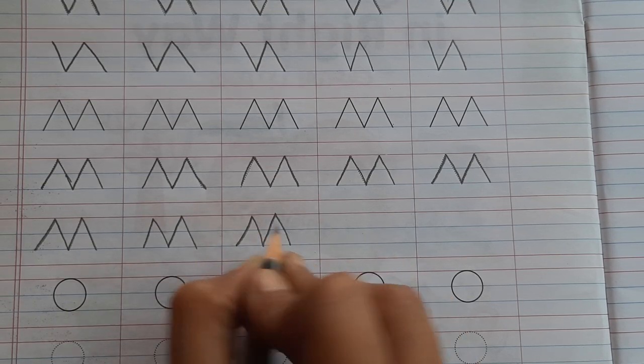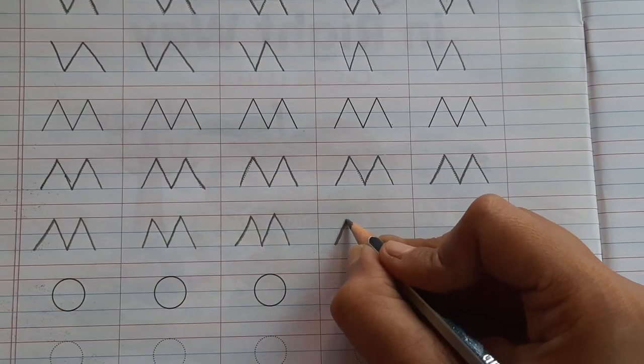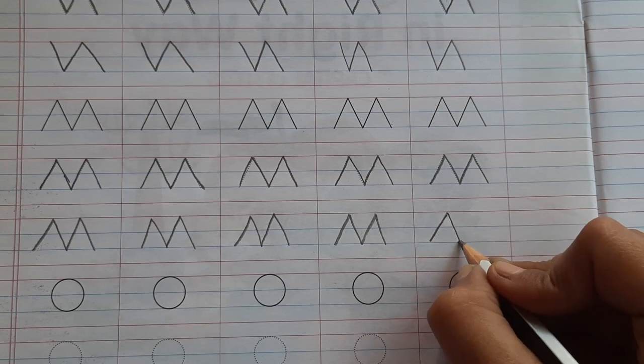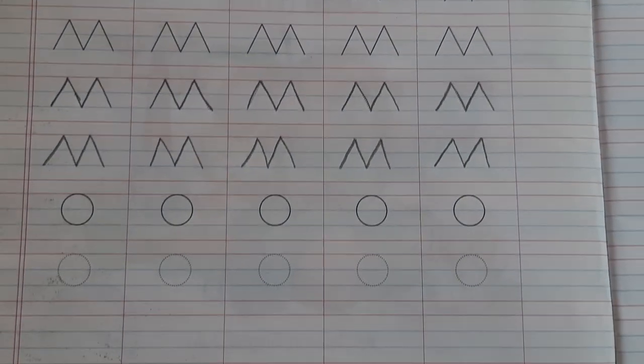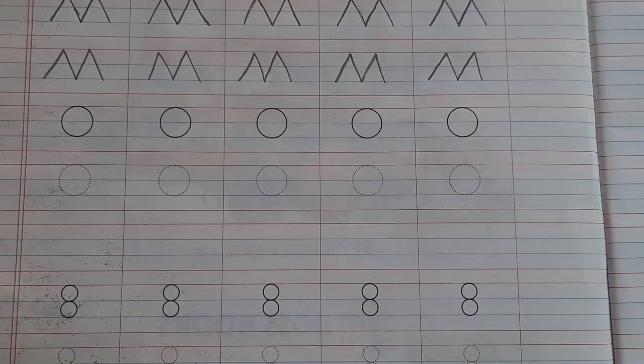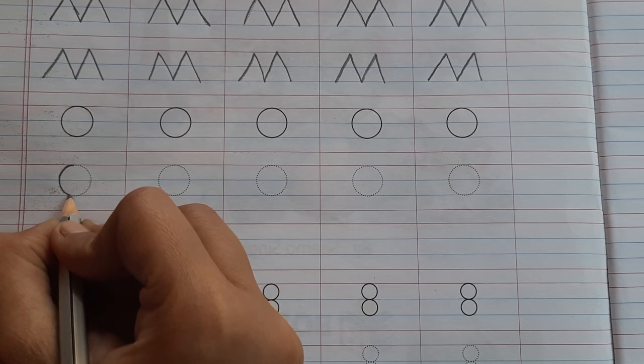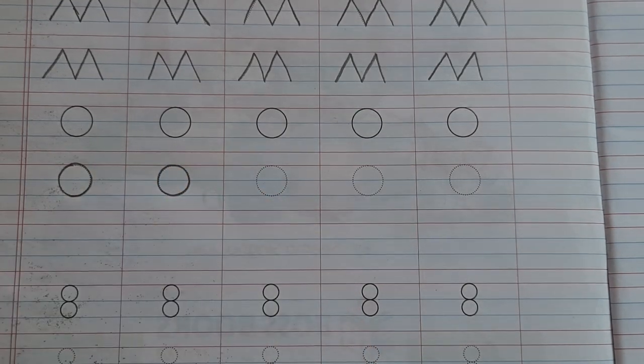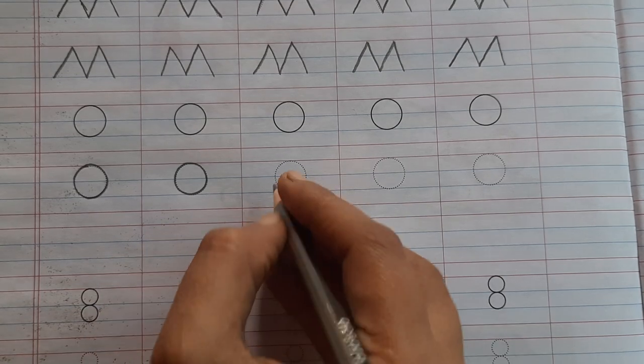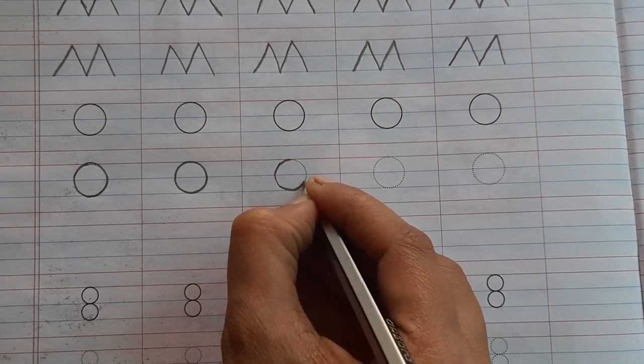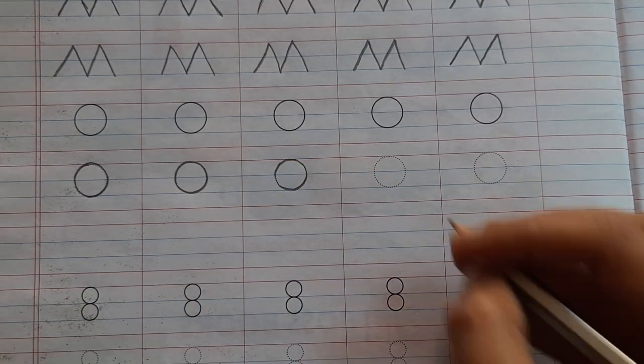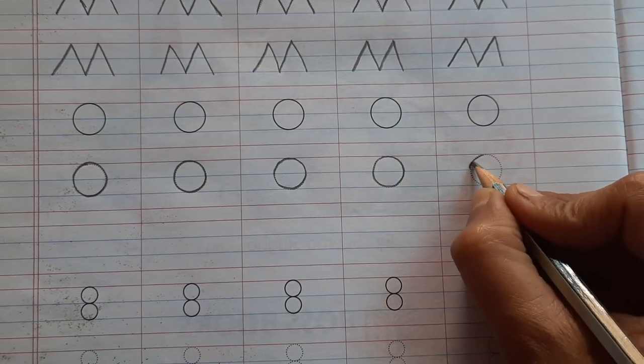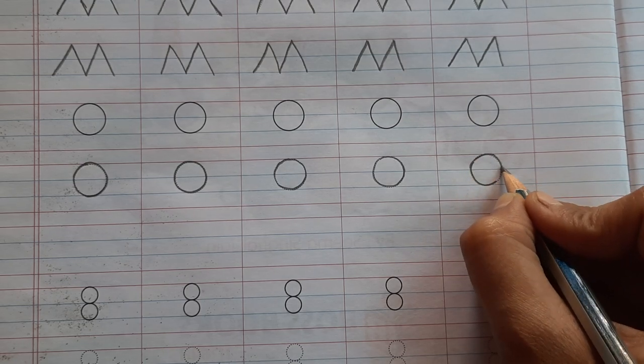The next one is circle. Let's start joining the dots to make a perfect circle. Move your pencil on that dots.